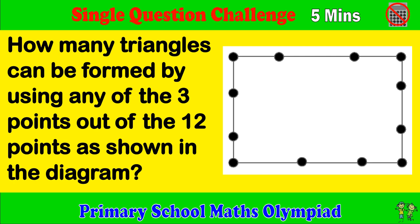How many triangles can be formed by using any of the 3 points out of the 12 points as shown in the diagram?